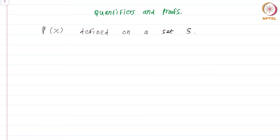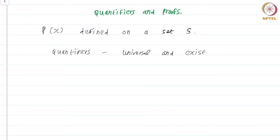Now, there are two other ways to make a property into a statement, and these are using what are known as quantifiers. There are two types of quantifiers: there is the universal quantifier, and then there is the existential quantifier. These are no doubt familiar to you from your high school mathematics.